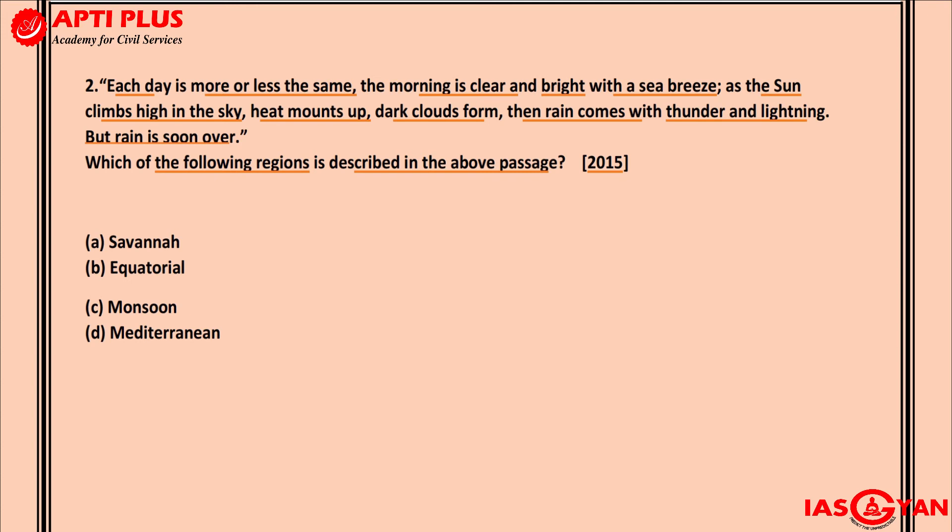From the sea breeze, we understand the temperature must be sufficiently high. Then as the sun climbs high, heat mounts up further. Dark clouds form and rain comes with thunder and lightning. For thunder and lightning, you need cumulonimbus clouds, which can only be formed if there are very strong updrafts of air — strong convection currents that give rise to cumulonimbus clouds, resulting in thunder and lightning along with rainfall.